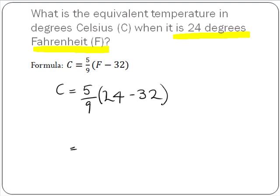Then we simplify what is in the brackets. So 24 minus 32 will give us minus 8.